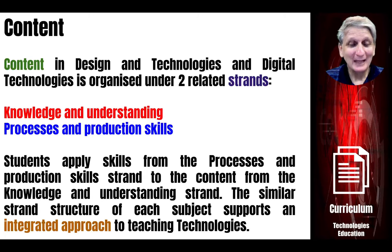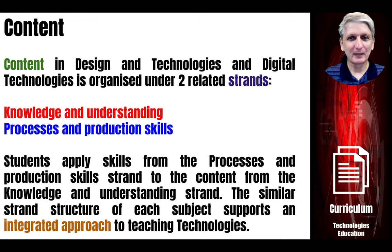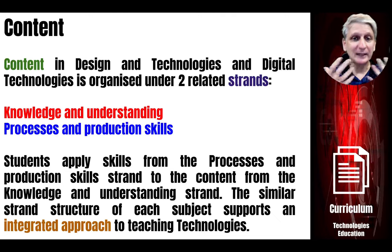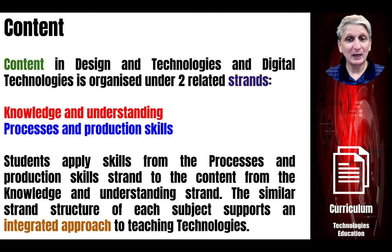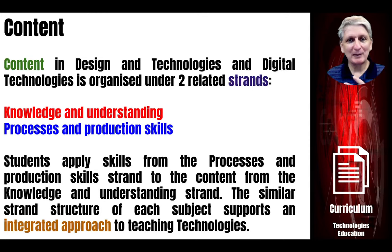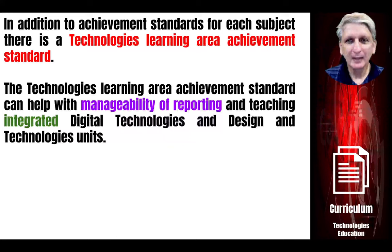Now, next week we'll look at content in more detail. Basically, technologies is broken into two strands: knowledge and understanding, and processes and production. Knowledge and understanding is what students need to know and understand. Processes and production skills are then being able to do things with that knowledge. The two are very much linked — one without the other isn't very effective. We need to know about things and be able to do something with that knowledge, and both are taught in an integrated way throughout the technologies learning area.